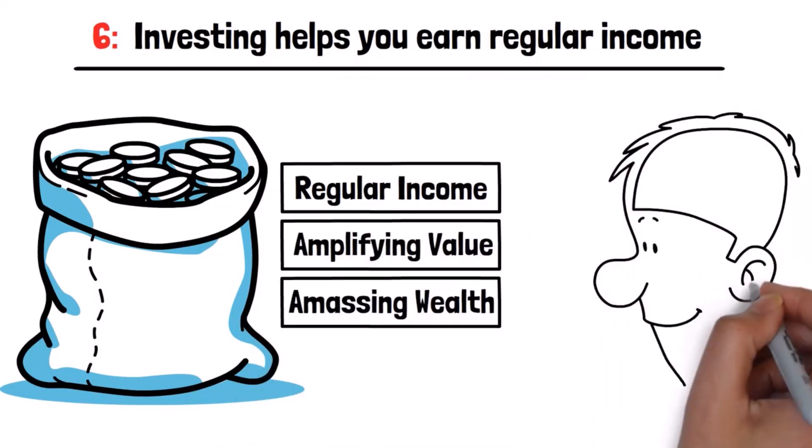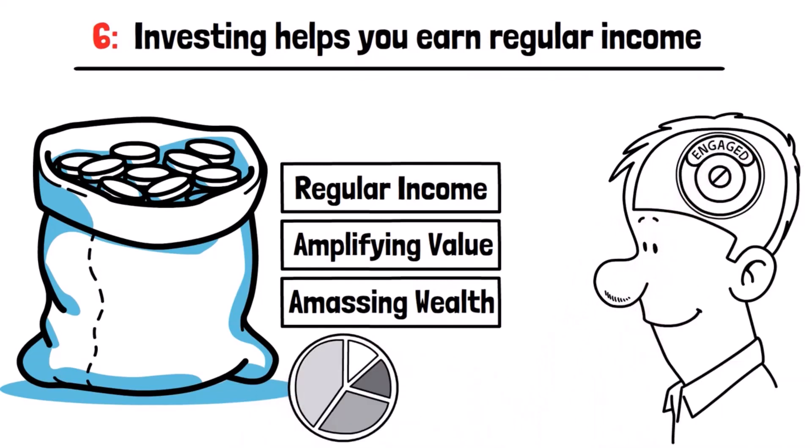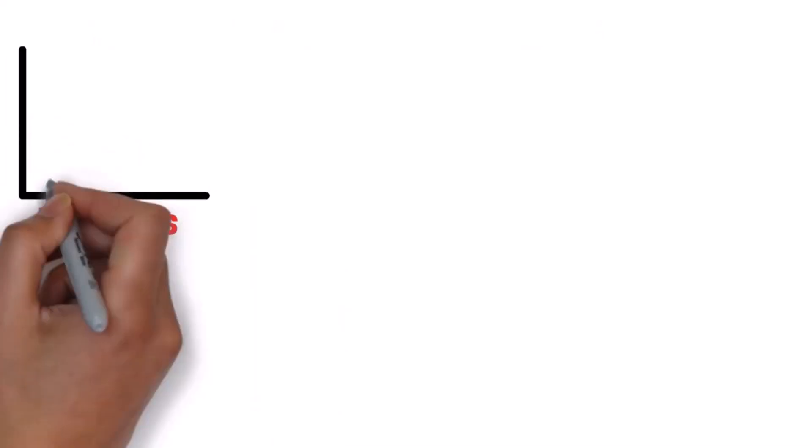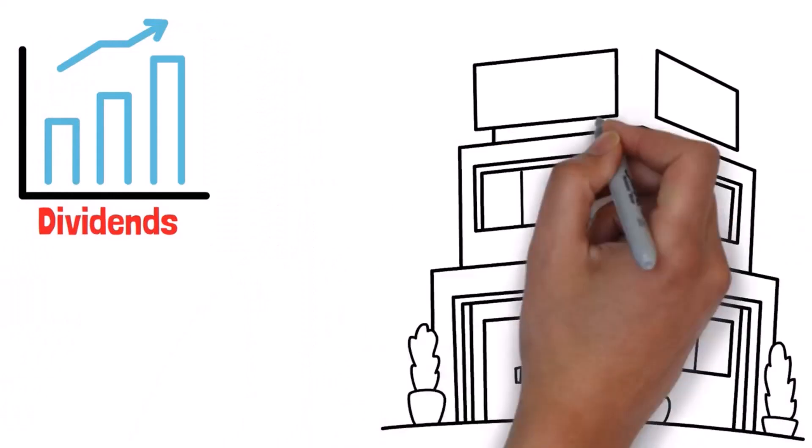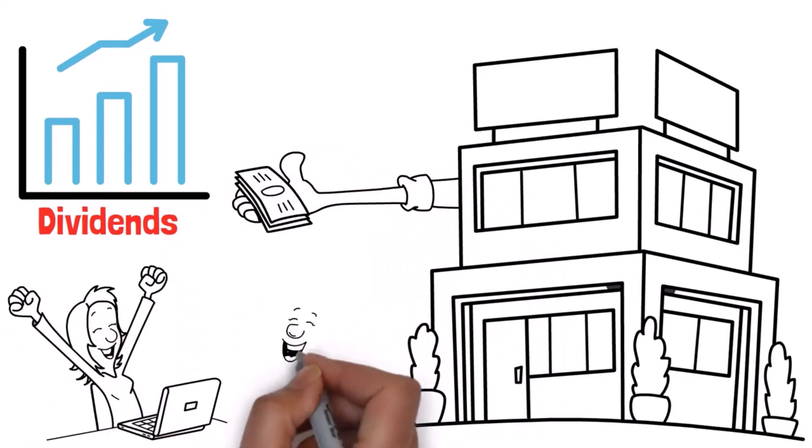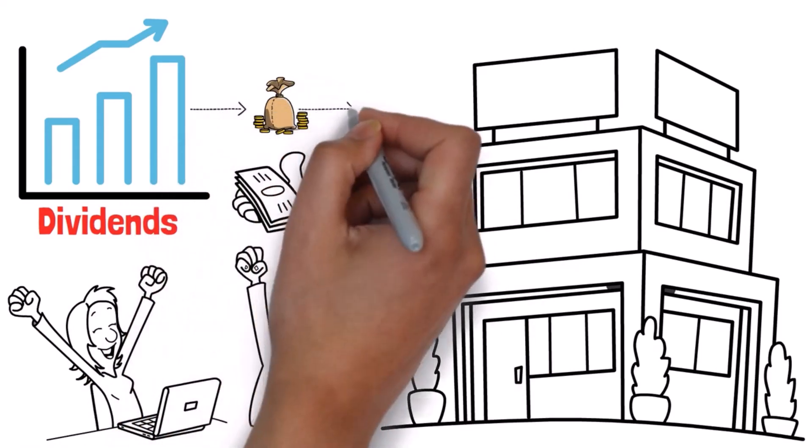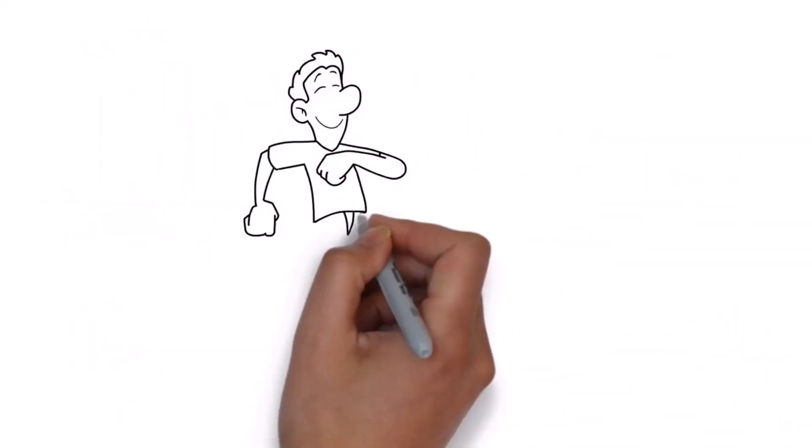Six, investing helps you earn regular income. Investing is pivotal for securing regular income, amplifying value, and amassing wealth. By intelligently allocating resources to diverse assets such as dividend-paying stocks, bonds, and real estate, individuals ensure a consistent income flow. Dividends in particular offer a stable revenue stream. Companies that distribute dividends signify financial stability, making them reliable investments. Reinvesting dividends compounds wealth, ensuring even further exponential growth over time.